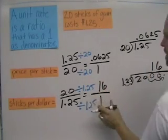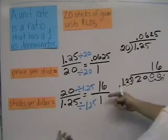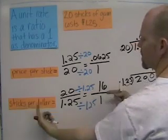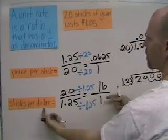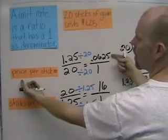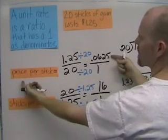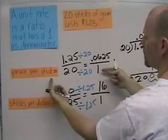So the answer is 16 to 1, or 16 sticks per one dollar, whereas up here the price was a little over six cents per one stick.